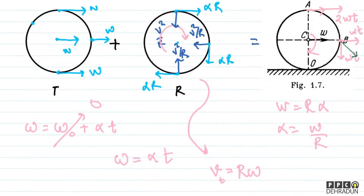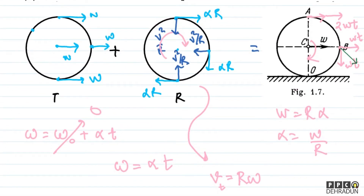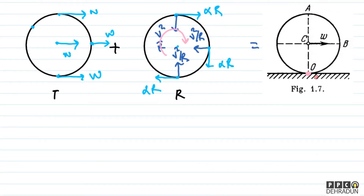For point O, which is at the very bottom: in the forward direction, speed due to translation is W into T, but due to rotation, speed in the backward direction is also W into T. So the net speed of point O is zero.